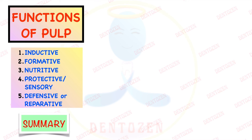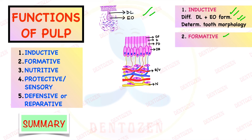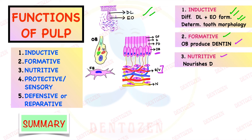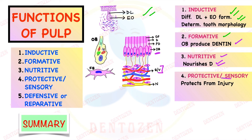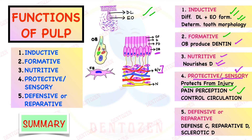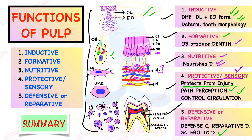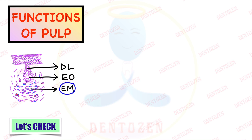Summary of the five functions of the pulp: First, the inductive role — helps in differentiation of dental lamina, enamel organ formation, and determination of tooth morphology. Second, the formative role — odontoblast cells produce dentine. Third, the nutritive role — blood vessels nourish the dentine. Fourth, the protective or sensory function — nerves provide pain perception and control blood circulation. Fifth, the defensive or reparative function — defense cells and undifferentiated mesenchymal cells form reparative dentine, while odontoblast cells form sclerotic dentine.